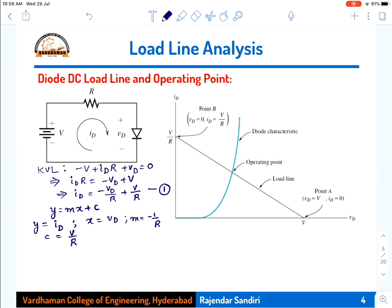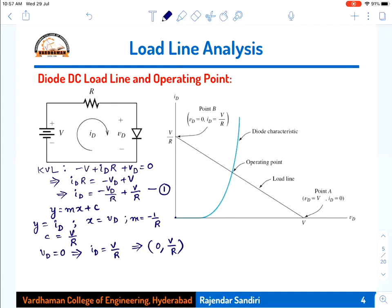To draw the straight line from equation 1, we need to calculate X-intercept and Y-intercept. Setting VD equal to zero gives ID equal to V/R, so point B on the Y-axis is (0, V/R). Setting ID equal to zero gives VD equal to V, so point A on the X-axis is (V, 0). The load line joins these two points, and where it intersects the diode characteristic is the Q point.